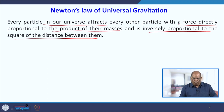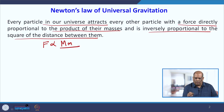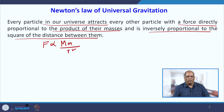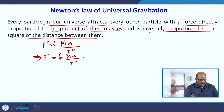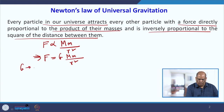If we write this mathematically, the force varies directly as the product of the masses and inversely as the square of the distance between them. We get the formula F = GMm/r², where capital G is called the universal gravitational constant.